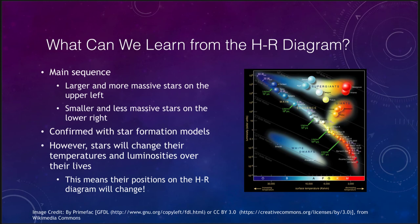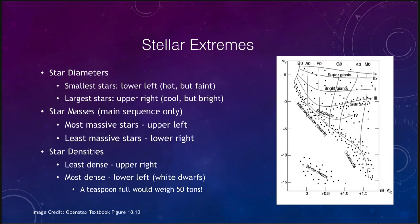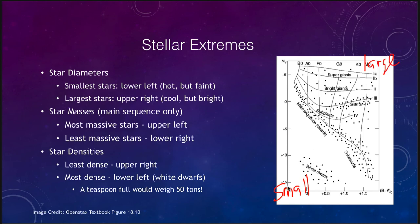Looking at the extremes of stars in terms of diameter: the smallest stars are in the lower left, and the largest stars are in the upper right. Star size increases as you move from the lower left to the upper right.